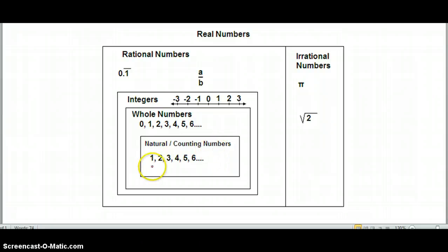Natural or counting numbers are those numbers you first learned to count with: one, two, three, four, and so on. Whole numbers, I always would remind you that there's an O in whole, and whole numbers include the zero. And then there are integers, which are the numbers you think of on a number line. So there are the positive whole numbers, the negative whole numbers, and zero.